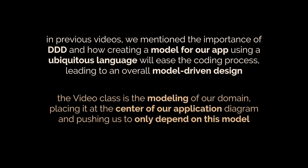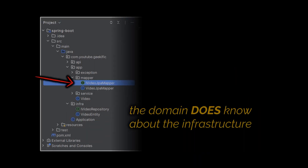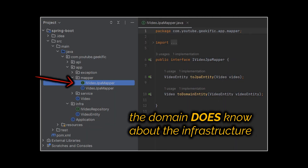In our simple example, we can argue that the video class is the modeling of our domain, as every action we are doing revolves around videos. This places this model at the center of our application diagram and pushes us to only depend on this model. However, we can also argue that in our current implementation the domain does know about the infrastructure — right there in the mapper, the video entity class is being accessed by the service.